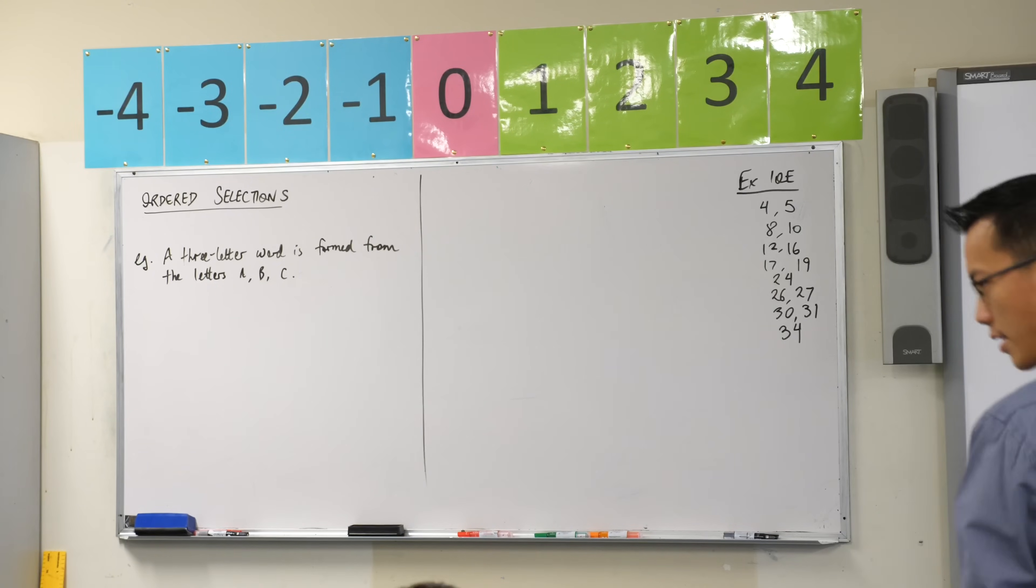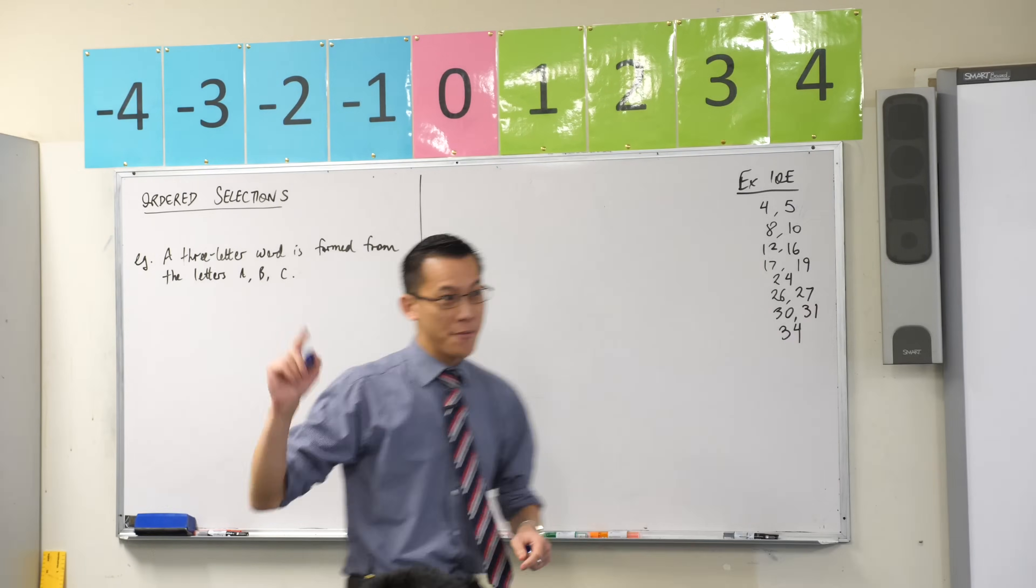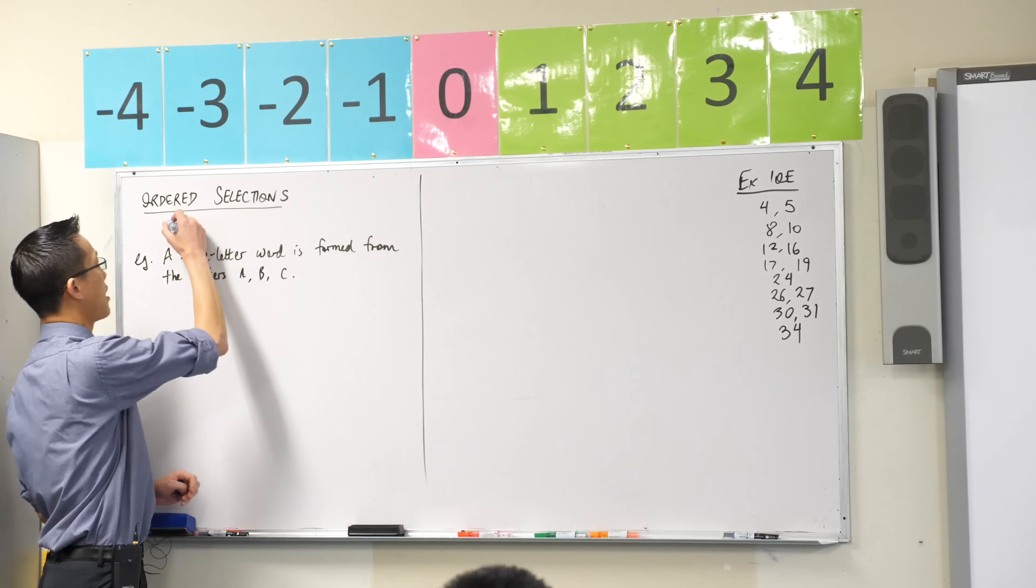Ordered selections. And another name for these, the sort of fancy name, is permutations.